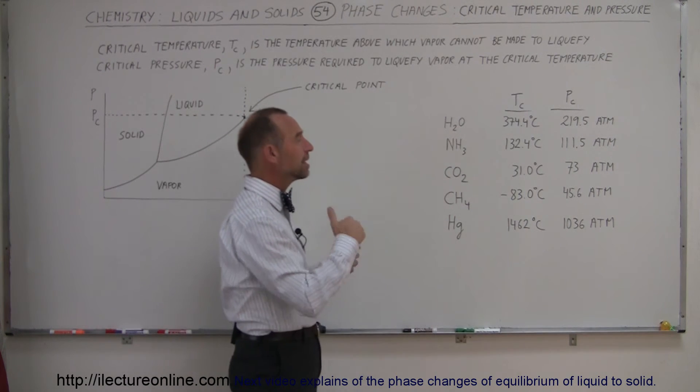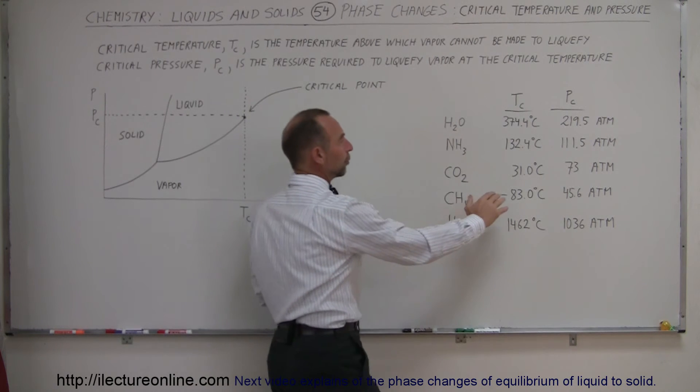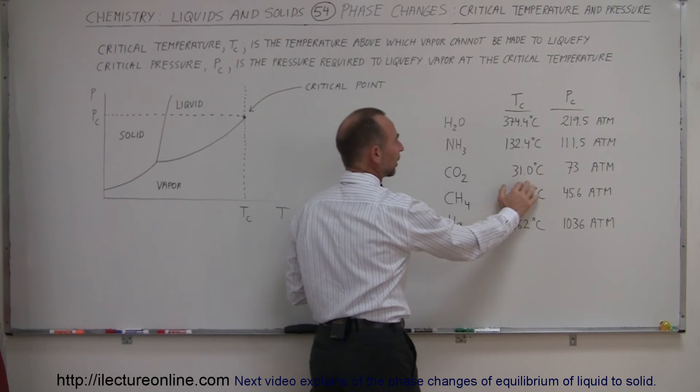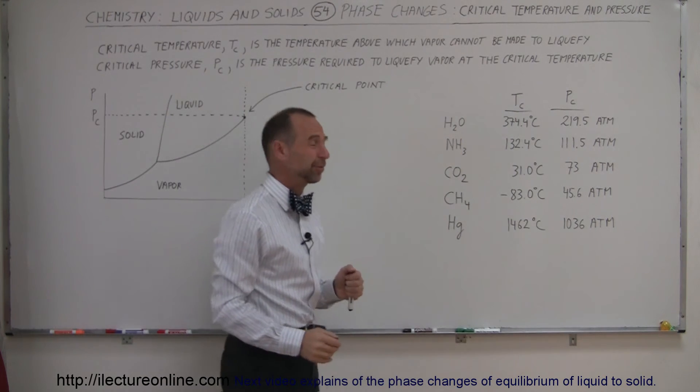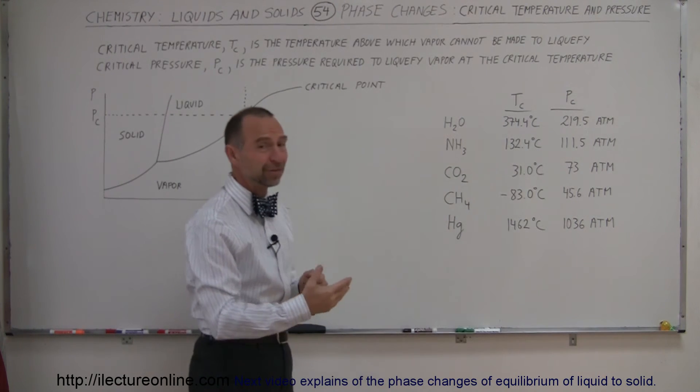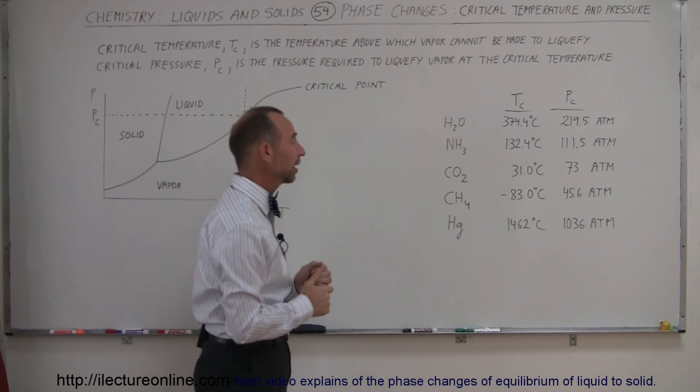You would be above the triple point. So to turn carbon dioxide into a liquid at 31.0 degrees centigrade, you would need a pressure of 73 atmospheres. Anything above 31 degrees centigrade, you cannot turn carbon dioxide into a liquid.